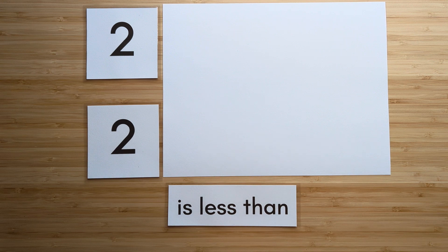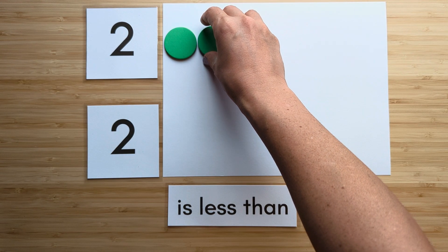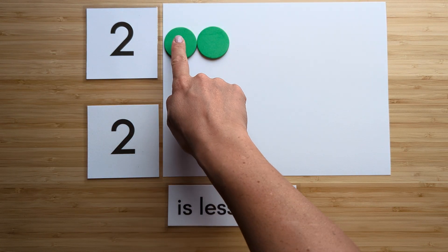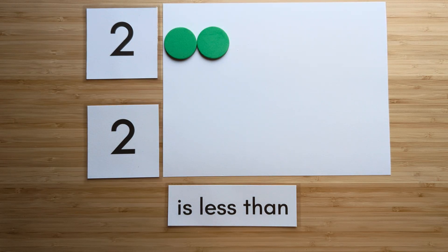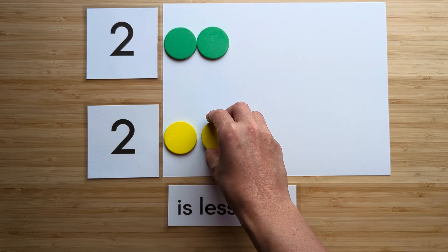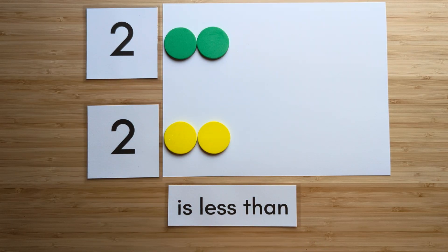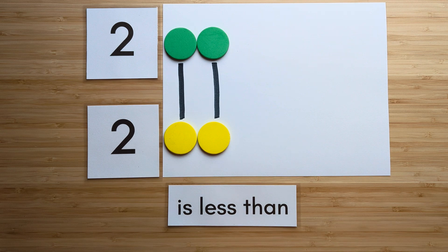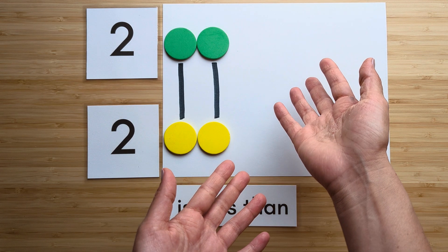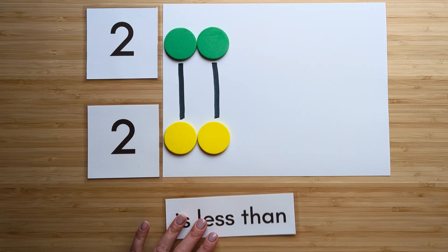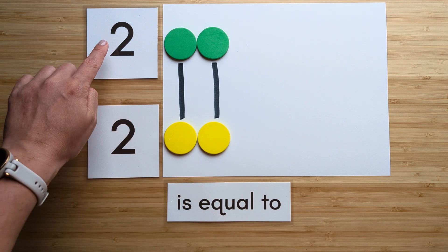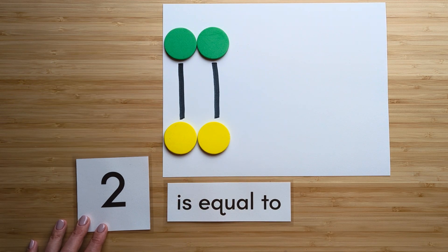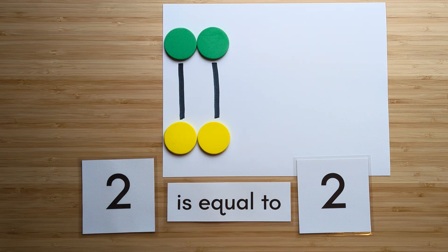Make the number two. Point and count: one, two. Make the number two. Point and count: one, two. Now let's compare. Match them up. Which one has extra? There are no extras because they're the same. They are equal. Two is equal to two. Nice job. We're all done. Thanks. Bye.